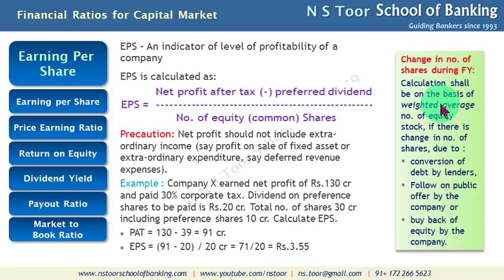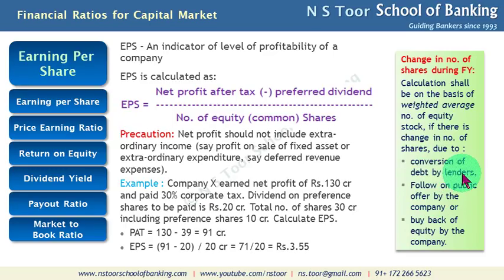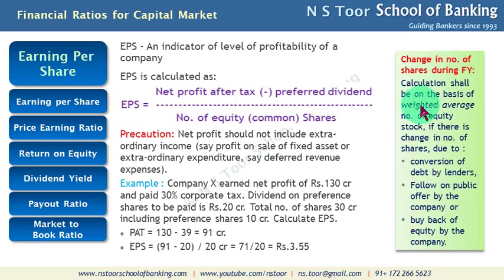Sometimes during the financial year there is a change in the number of shares. Companies may buy back equity shares, go for a fresh public issue, or lenders may convert loans into equity. Because of these reasons, there can be a change in the number of shares during the financial year. Whenever such a change occurs, a weighted average of the number of equity shares has to be calculated. If there is no such change, the straightforward number can be used.